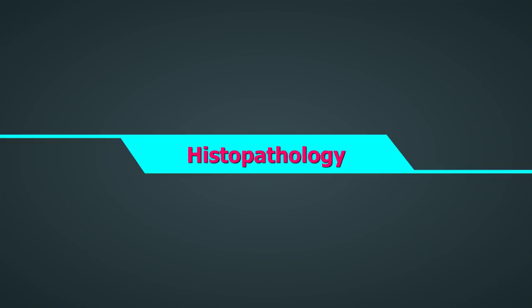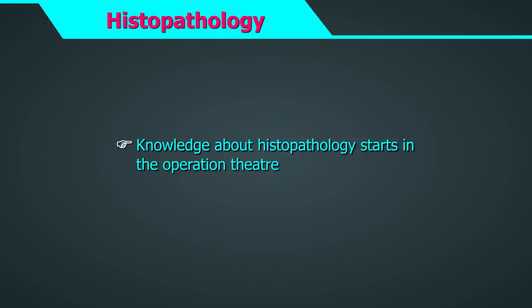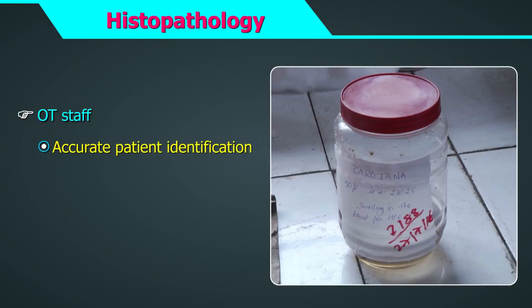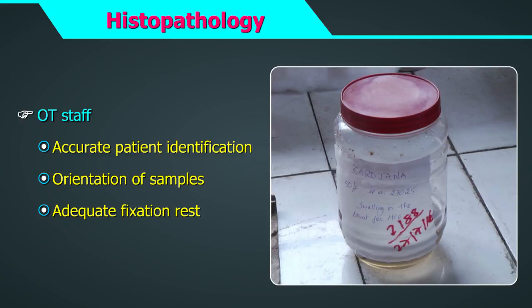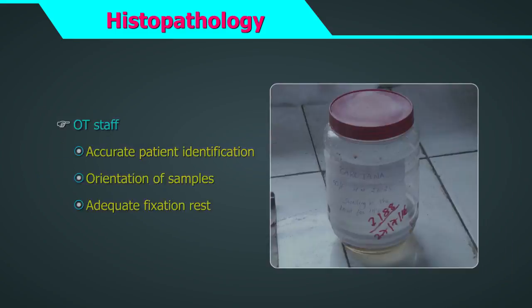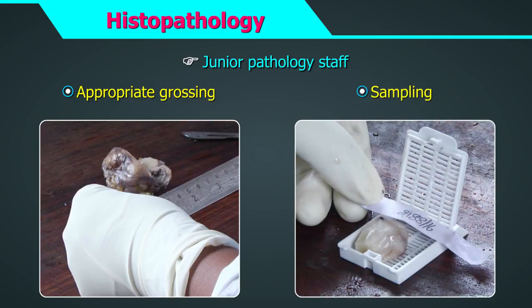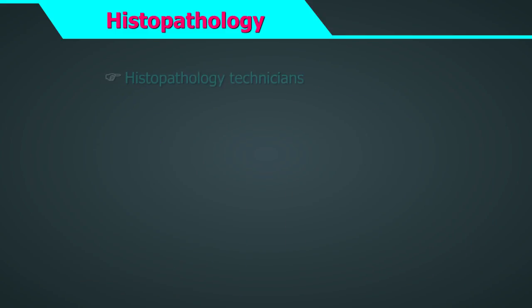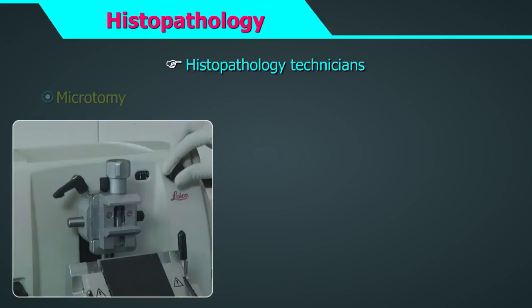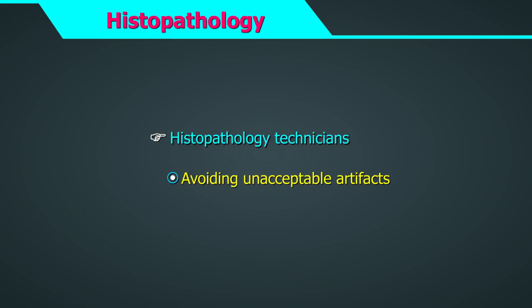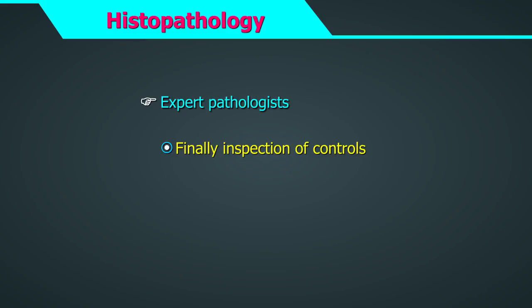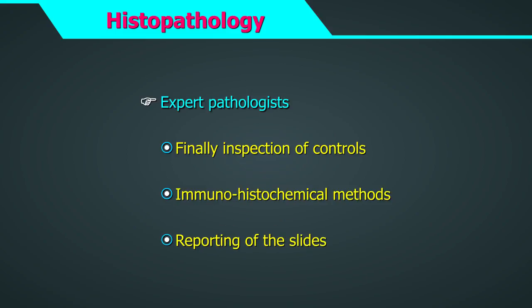Histopathology is a vast subject. Knowledge about histopathology should start in the operation theatre where samples are collected. Accurate patient identification, orientation of samples, and adequate fixation rest in the hands of OT staff. Appropriate grossing and sampling is handled by junior pathology staff. Adequate processing, embedding, microtomy, staining, and avoiding unacceptable artefacts all rest with histopathology technicians. Finally, inspection of controls and reporting of slides are in the hands of expert pathologists. Going through the entire gamut of activities is beyond the scope of this video, and so we shall dwell only on select aspects.